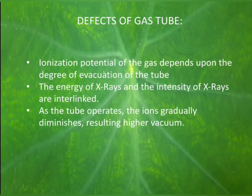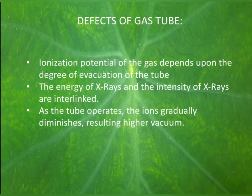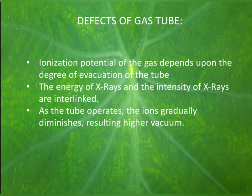Now let's see the disadvantages of the gas tube. The first disadvantage is that the ionization potential of the gas always depends on the degree of evacuation of the tube. If there is a large amount of residual gas present inside, the x-rays produced will be of lower voltage. If you try to increase the voltage beyond ionization, the tube current increases enormously, leading to melting of the target.